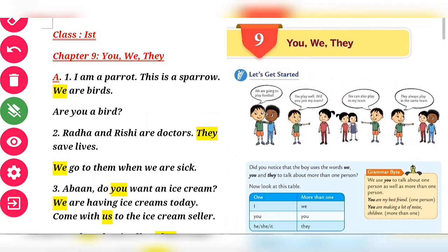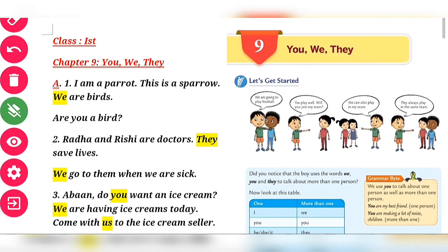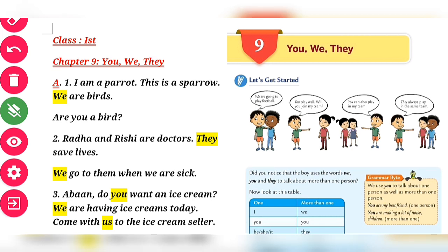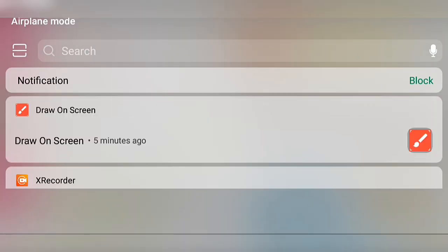So in this way, students, we have completed Exercise A and B of Chapter Number Nine. I hope that this chapter is clear to you. Here we have discussed 'you,' 'we,' and 'they' — pronouns used for more than one person. In the next class we will move on to the next chapter. Till that time, thank you so much and have a nice day.